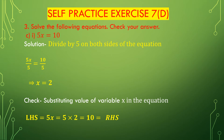Now we solve question number 3, bit c: 5x = 10. Here 5 is multiplied with x, so we have to divide by 5 on both sides of this equation. We get 5x divided by 5 equal to 10 divided by 5. 5x divided by 5 is x, and 10 divided by 5 is 2. So x = 2.